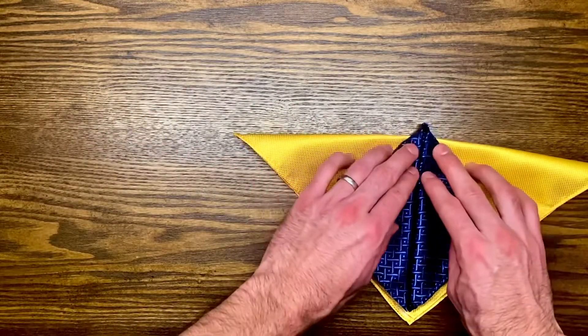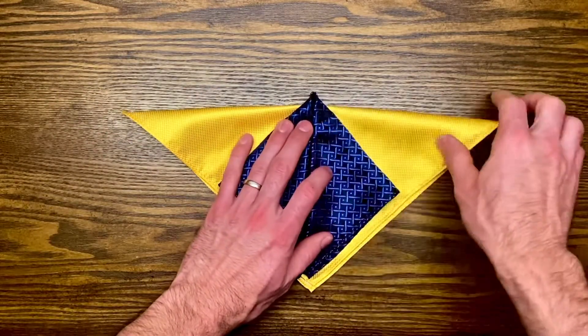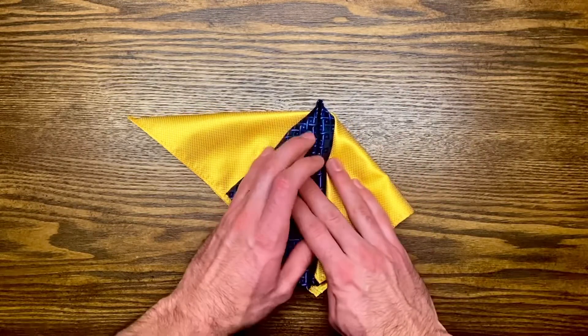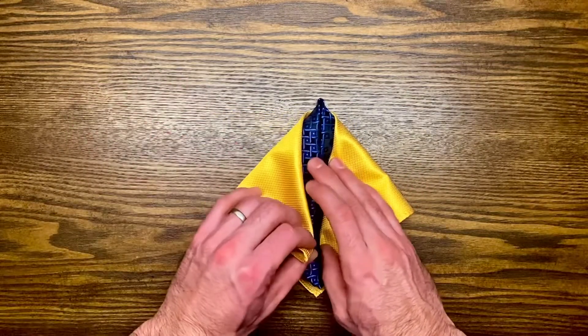Now lay your first pocket square over the top middle of that, and fold those outside corners to your bottom corner, wrapping your first one.